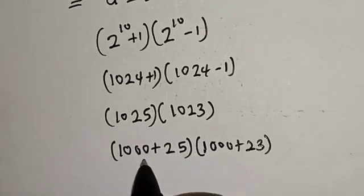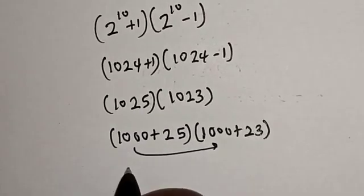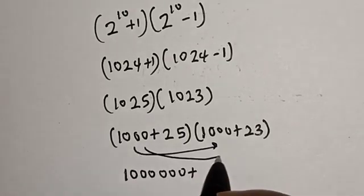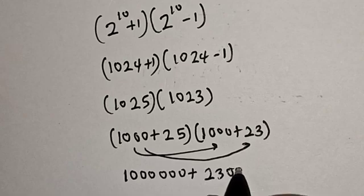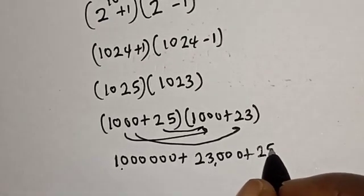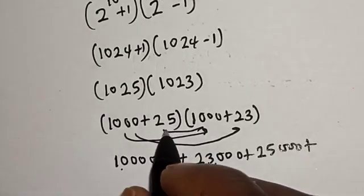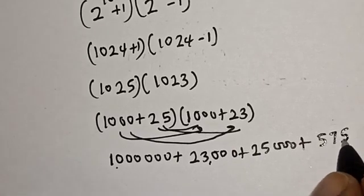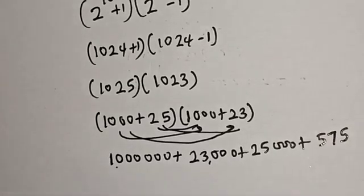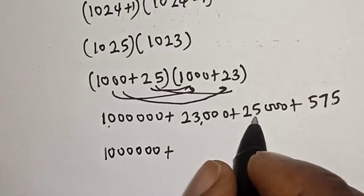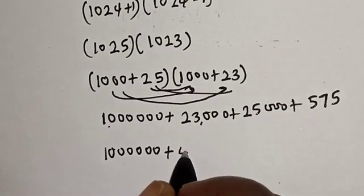Now let's multiply out these two equations. This times this is 1,000,000, plus if you multiply this by this we have 23,000, plus this times this is 25,000, plus this times this is 575.